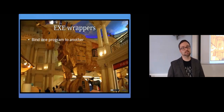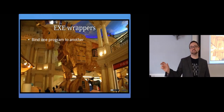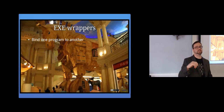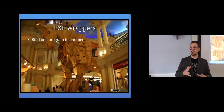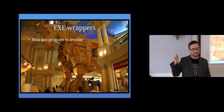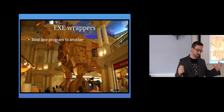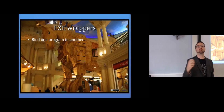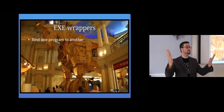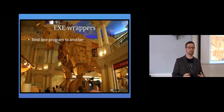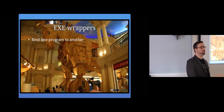An .exe wrapper is when you take two programs and bind them together into one .exe file. When you run it, it runs both programs. For example, you could take a whack-a-mole game and combine it with the Netbus Trojan Horse server component, generate a new executable, and send it to someone. When they run it, the game really does start — so as far as they know you sent them a game — but the server is also running and their computer has been infected by a Trojan horse.